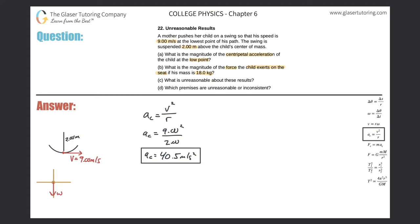Centripetal forces are net forces here. At the low point, the swing has to not only overcome the weight of the child but also keep the child in the circular path. So there must be a force pointing straight upwards — F sub N, the normal force that the seat is exerting on the child. The sum of these forces is going to be the centripetal force. Since this is a pure Y problem, I'll write the sum of forces in the Y direction equals M times A sub Y.